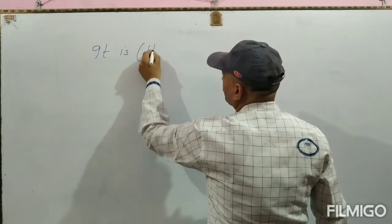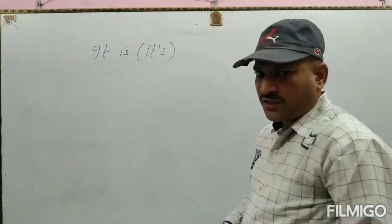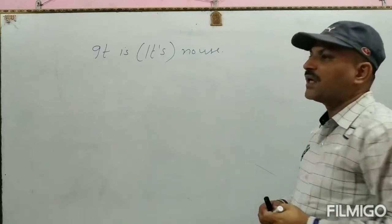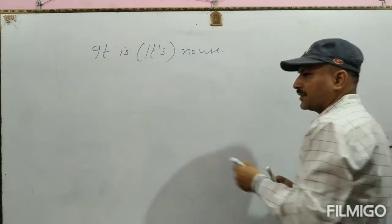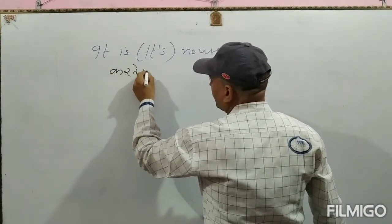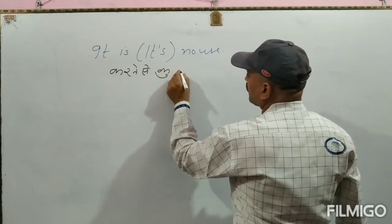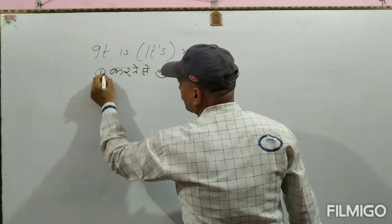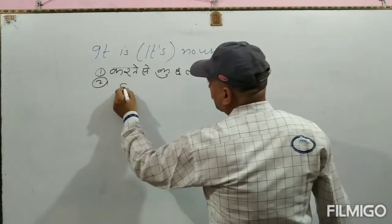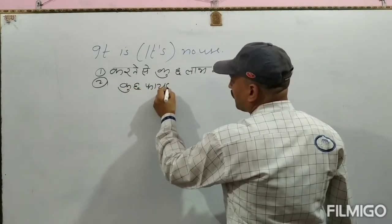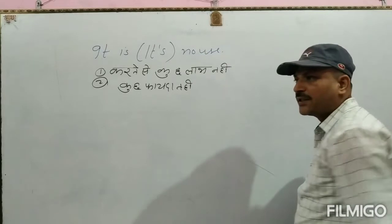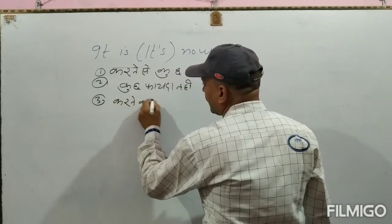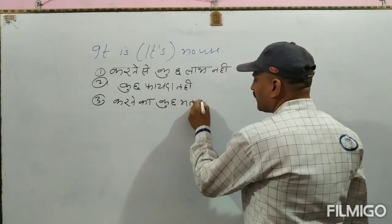इसको हम 'It's' लिखते हैं। Conversation में 'It's' बोलना ही अच्छा होता है। इसका अर्थ या मतलब होता है — करने से कुछ लाभ नहीं, या फिर कुछ फायदा नहीं, या फिर करने का कुछ मतलब नहीं।